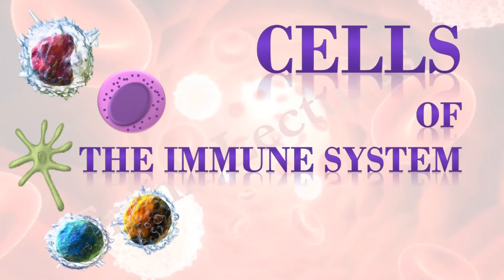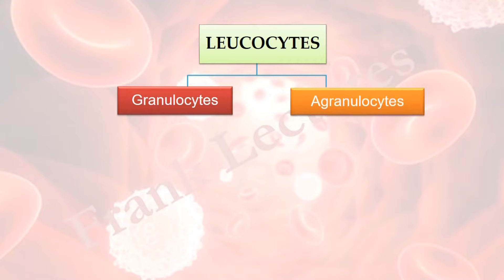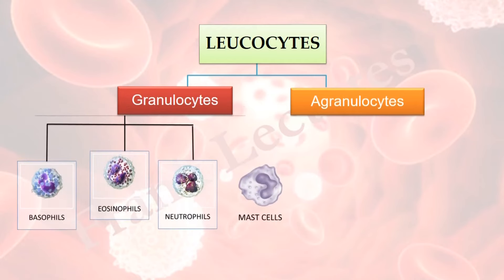Cells of the immune system, part 2. Recall that in the last video lecture we studied that leukocytes are divided into two groups: granulocytes and agranulocytes. We covered granulocytes, which are of three types: basophil, eosinophil, and neutrophil. We also studied mast cells, which are similar in function and appearance to basophils.